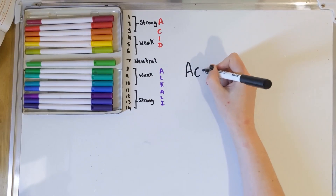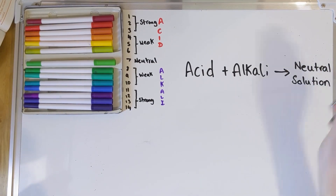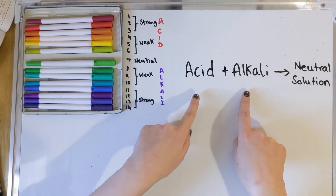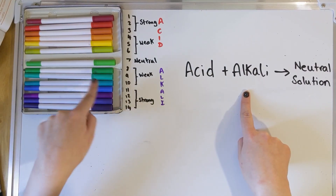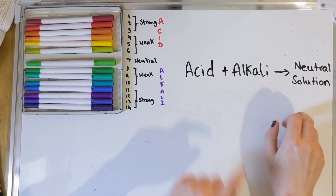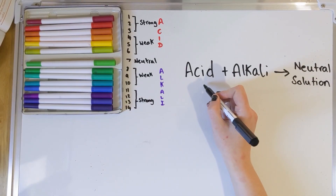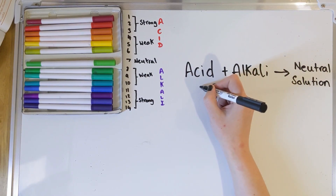Now we're going to look at neutralization itself. Neutralization is a reaction when you mix an acid and a base together, or an acid and alkali together. It's important to use a bit of logic here: if you had a very strong acid at pH 1 and mixed it with a weak alkali at around pH 9, even with the same volume, they wouldn't necessarily make a neutral solution. This equation only works if both the acid and alkali are of similar or the same strength.